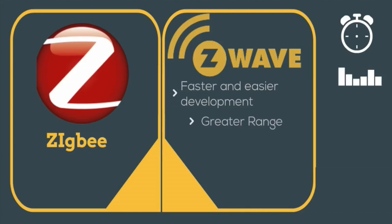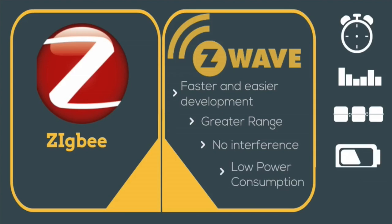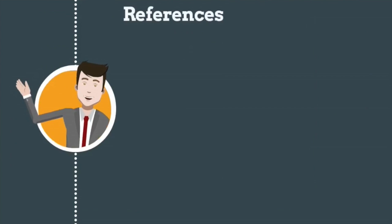Z-Wave's range is greater than Zigbee's simply because of the lower operating frequency. Zigbee uses the widely populated 2.4 GHz ISM band, which it must share with Wi-Fi, Bluetooth, and other radios that can produce interference. Whereas Z-Wave uses its own band at 908.42 MHz, so there is no chance of interference at all. Compared to Zigbee, Z-Wave uses very low power consumption, and operation on batteries is set to last for more than 5 years.